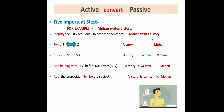How do you convert active voice into passive voice? There are five important steps. See the example: 'Mohan writes a story.' The first step is to identify the subject, the verb, and the object of the sentence. Here, Mohan is the subject, 'writes' is the verb, and 'a story' is the object.